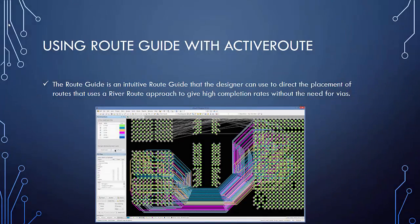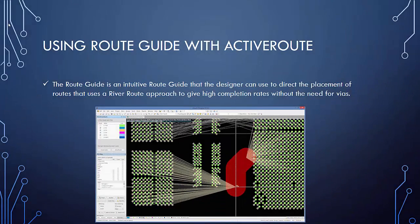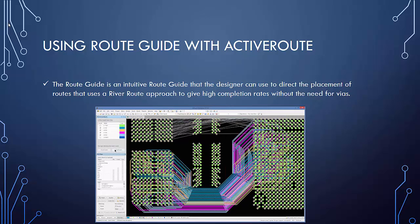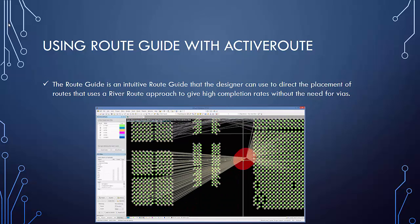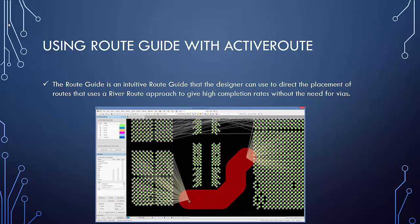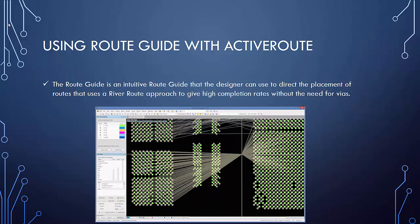How can we use the route guide with ActiveRoute? The route guide is an intuitive tool that the designer can use to direct the placement of routes. It uses a river route approach to give high completion rates without the need for vias.